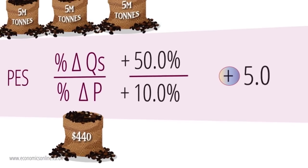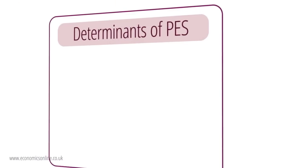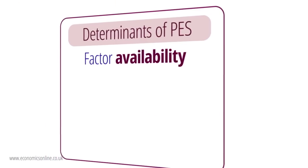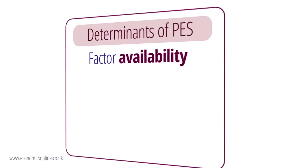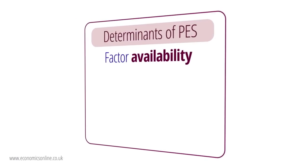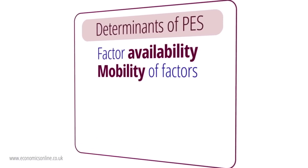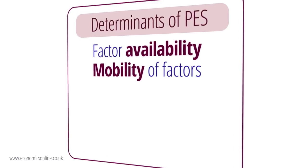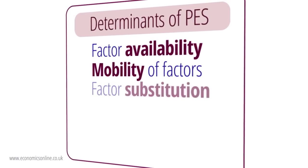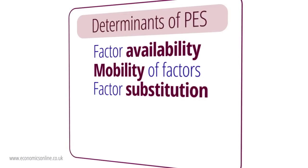Elasticity of supply is influenced by the following: the availability of factors of production — when factors are unavailable or in short supply, elasticity of supply is reduced. The mobility of factors — mobility increases elasticity of supply. The ease with which factors can be substituted if there is a shortage of one factor.